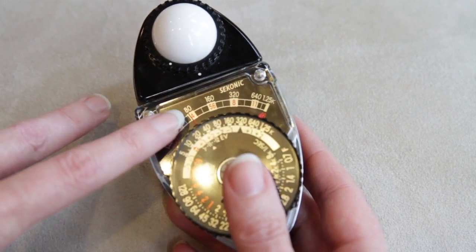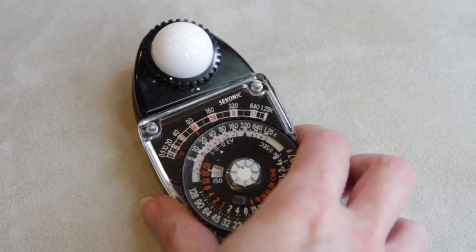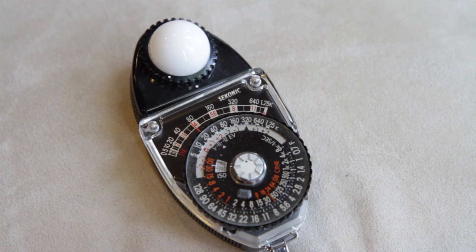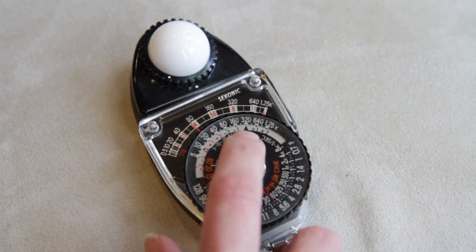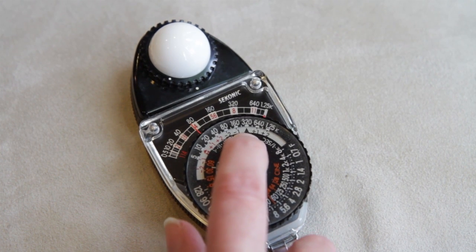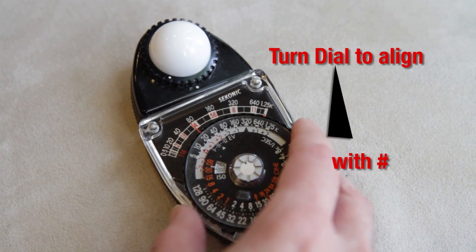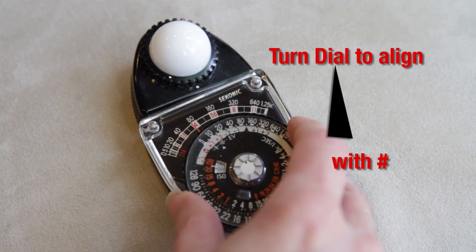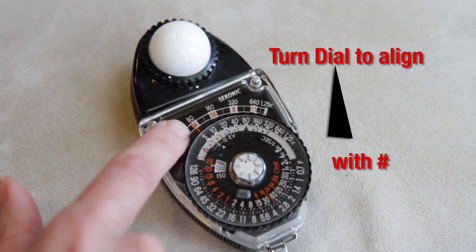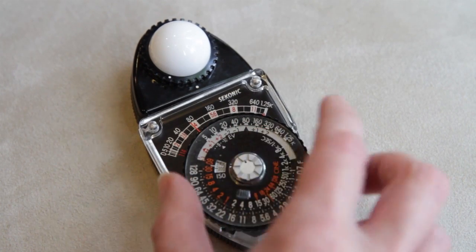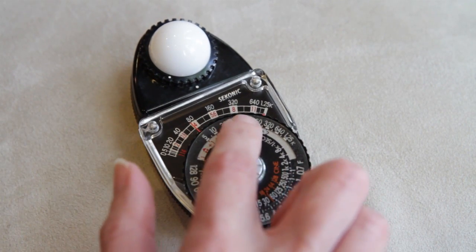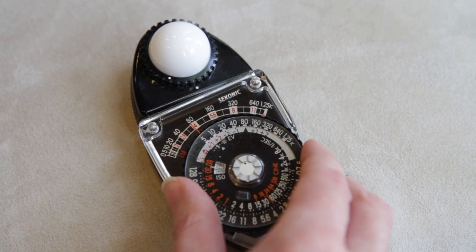80 foot-candles is really not something that I can set on my lens, so what do I need to do? I need to match that number up with this triangle right here, and this will give me some useful information once I do that. I line wherever my needle has gone up with those numbers that match up. And here it's just 80, so 80 is lined up with the triangle.